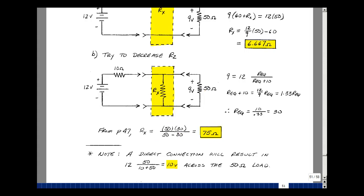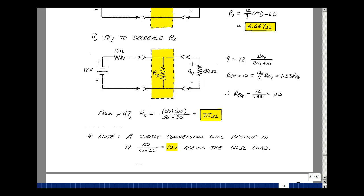So now we've got two possible designs: putting a series resistance of 6.66 in series with the 10 or putting a 75 ohm resistance in parallel with the 50.